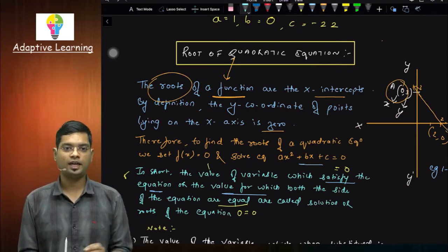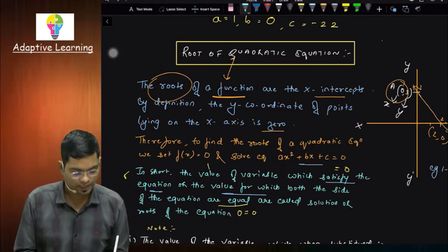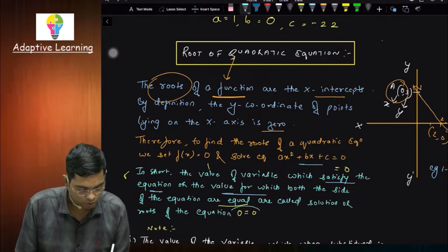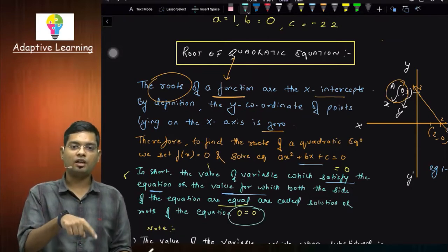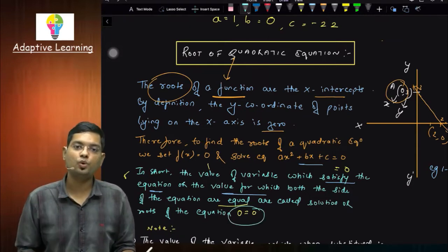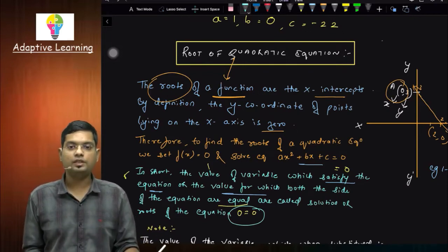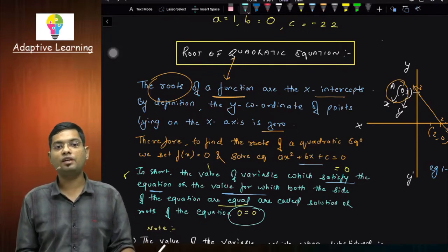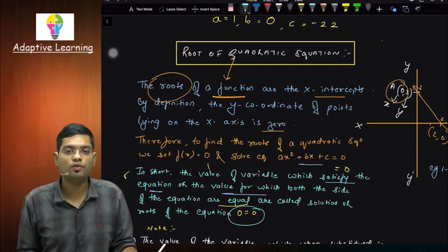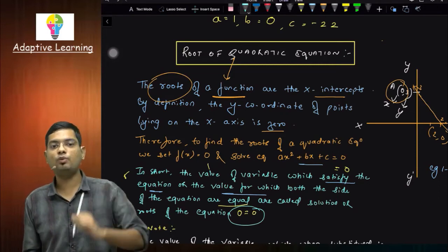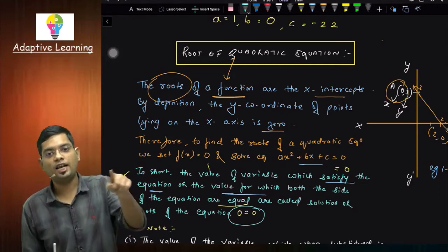You substitute one and see — it will not come. You substitute two and see — it will not come. When 0 is equal to 0, then you say the root. In short, the value of the variable which satisfies the equation, or the value for which both sides of a quadratic equation are equal. Though, this is trial and error method.